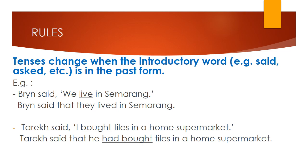Tenses change when the introductory words like 'said,' 'asked,' etc., are in the past form. For example, Brin said 'We live in Semarang.' It's reported as: Brin said that they lived in Semarang. The next example: Tarek said 'I bought tiles in a home supermarket.' It's reported as: Tarek said that he had bought tiles in a home supermarket. We can see that 'live' is changed into 'lived,' and 'bought' is changed into 'had bought.'